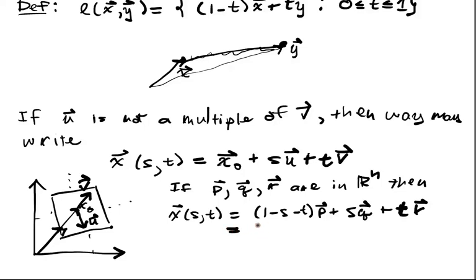And I can also say that this is, say, T₁P plus T₂Q plus T₃R. And these guys, all together, these are the barycentric coordinates.